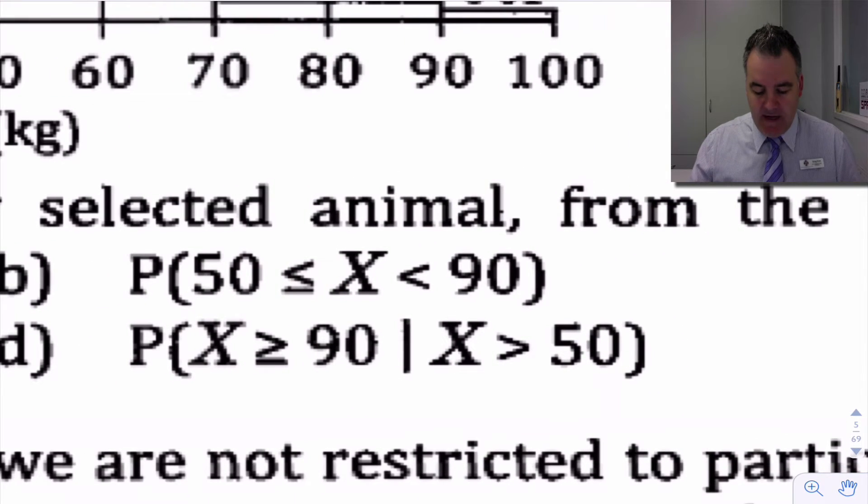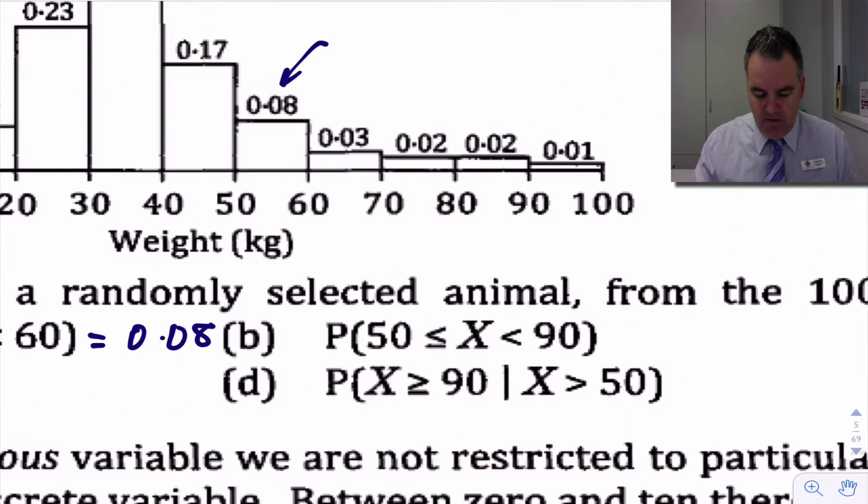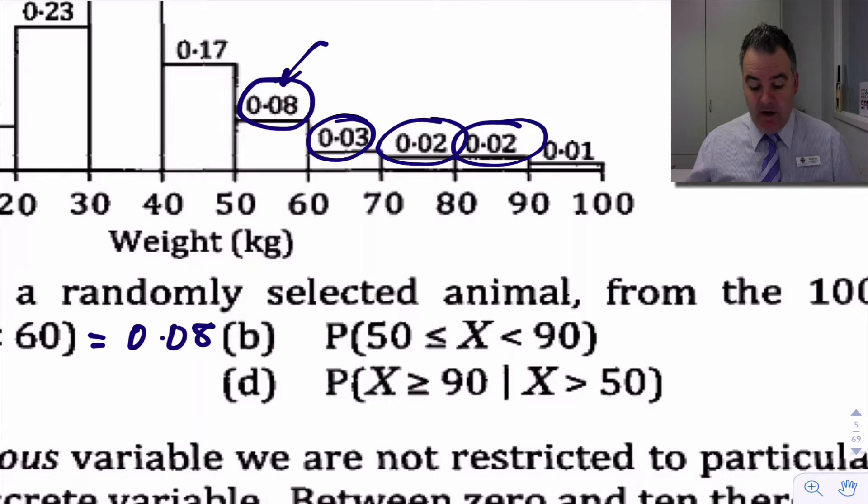The second one was P(X is between 50 and 90). So now we've got 50, between 60 and 70, 70 and 80, 80 and 90. So we'd have to add all those up. We're at 11, 13, 15. So if we add all those relative frequencies up, we should get 0.15.